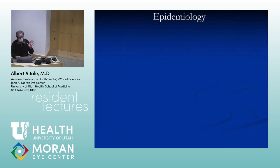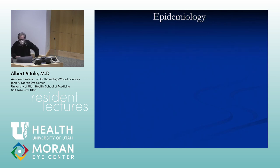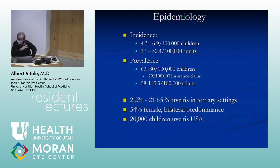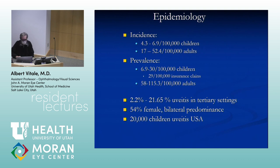Epidemiology: pediatric uveitis is about fourfold less common than adult uveitis in terms of incidence and prevalence. However, it occurs in young kids, it's chronic and insidious over a long time, representing significant morbidity. It represents about 2.2 to 21% of uveitis in a tertiary care setting depending on where you're sampling.